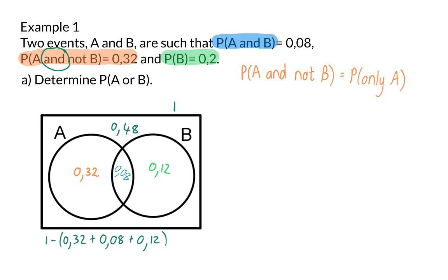Now that we have completed our Venn diagram, we can go back to the question, which is to determine the probability of A or B. And as mentioned earlier, this is then A and B, everything together, because OR means union. So, this will be the 0.32 of only A, the 0.08 of A and B, and the 0.12 of only B. So, we will have a probability of 0.52.